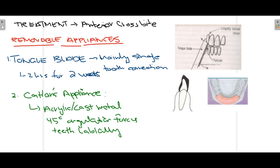The second removable appliance used for anterior crossbite is Catalan's appliance — an acrylic appliance constructed at an angle of 45 degrees. When constructed at this angle, a labial force is generated which leads to labial positioning of the teeth, correcting the crossbite. The same condition applies: only one or two teeth can be corrected with removable appliances.